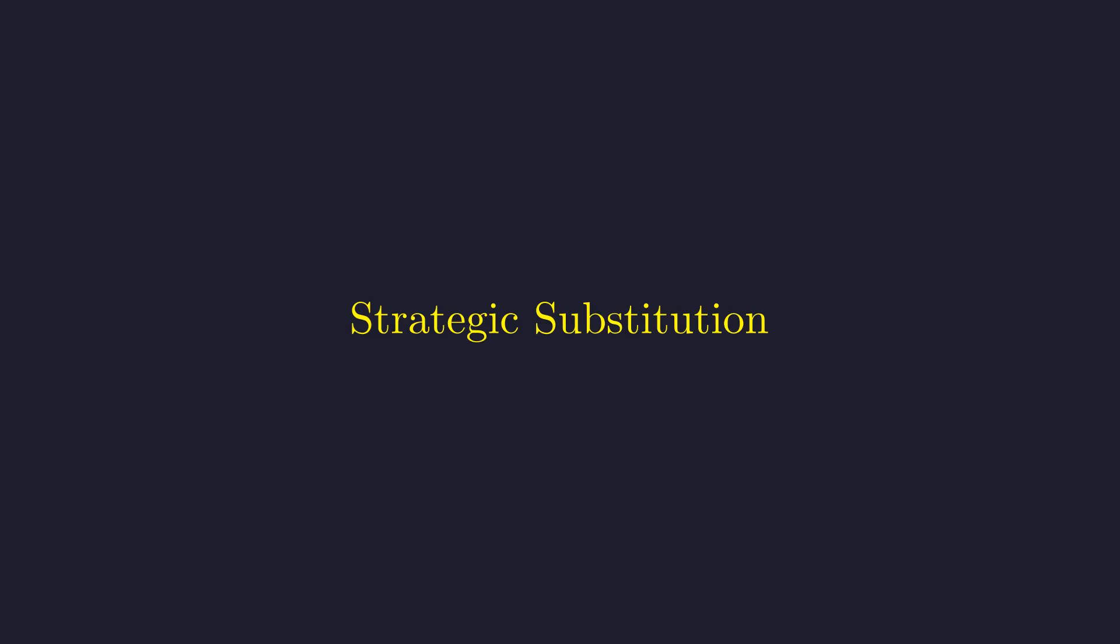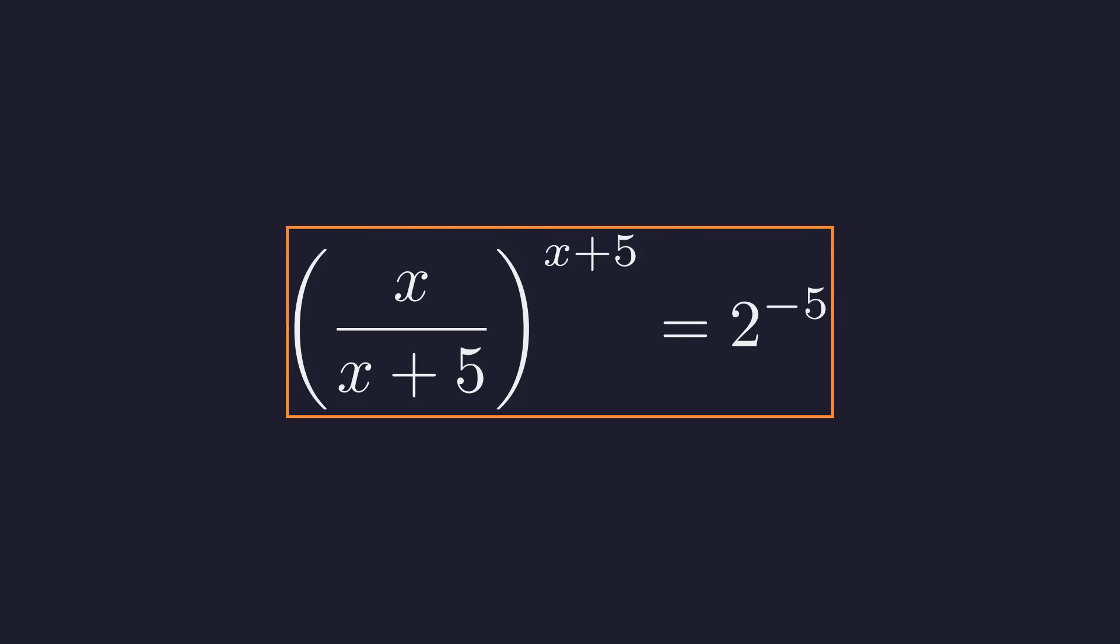A strategic substitution will unravel the knotted structure of this equation. We begin with the original expression. We rewrite the right-hand side as a power of 2. 1 over 32 is simply 2 to the power of negative 5. Notice that the base is the reciprocal of the term inside the exponent. This inverse relationship is exactly what guides our substitution.